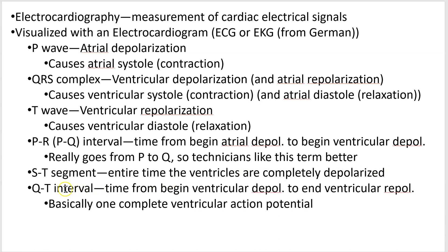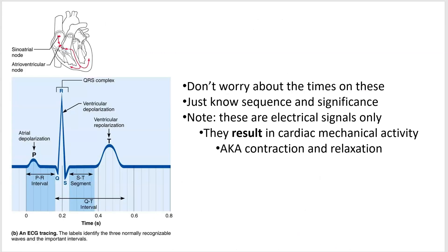The QT interval goes from Q to the end of T — from the beginning of ventricular depolarization to the end of ventricular repolarization. This represents one complete ventricular trip through the action potential: it begins to depolarize and finishes repolarizing, so the ventricles have completely reset electrically by the end — roughly one complete ventricular cycle, which we'll cover in the next video.